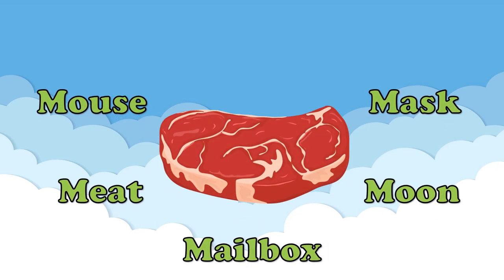Let's proceed to this one. What picture do you see? Is it a mouse, meat, mailbox, mask, or moon? That's right! It's meat!